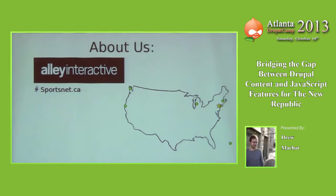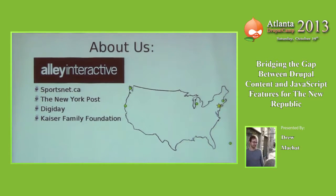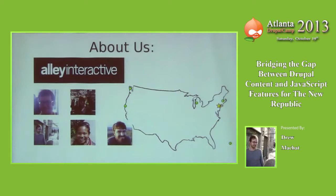Some notable launches this year: Sportsnet Canada, the New York Post, Digiday, Kaiser Family Foundation, and the New Republic, which is the one we'll be talking about today. This is the Ali team that worked on New Republic — Austin, Bridget, myself, Mai, and Matt. Austin and Matt are the co-founders of Ali, Bridget's our project manager, and myself and Mai are the primary Drupal developers. We work on building modules to add features to sites like New Republic.